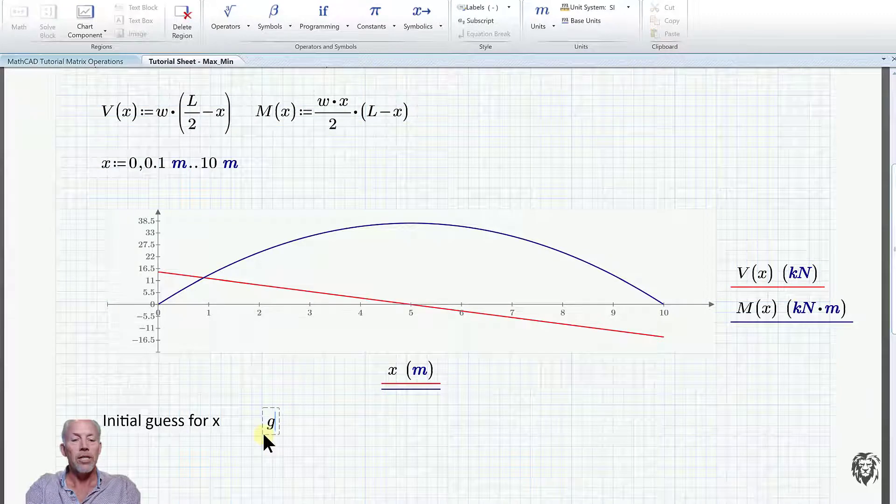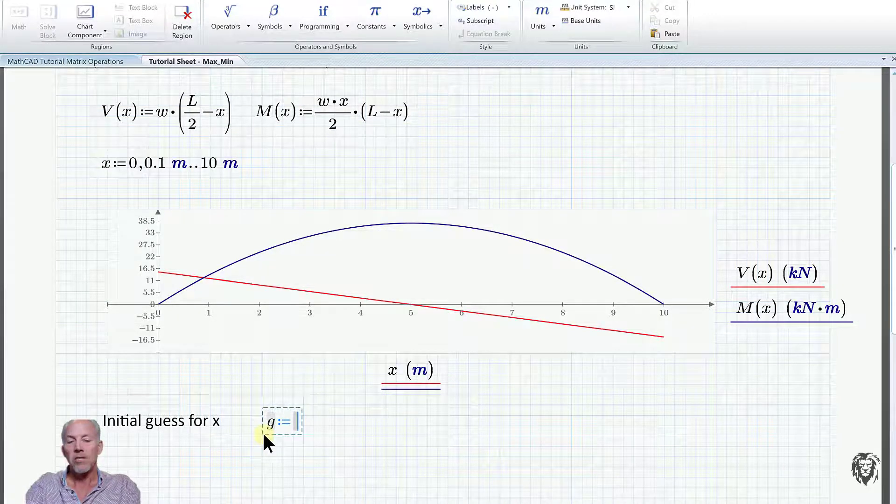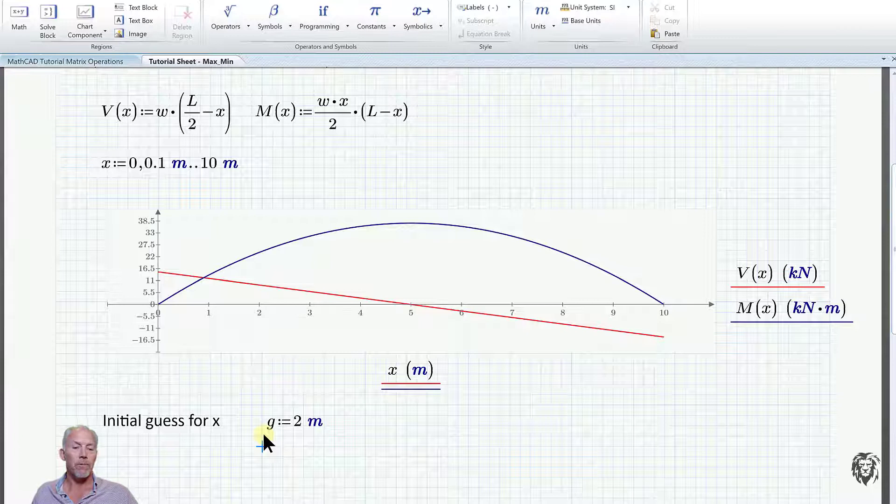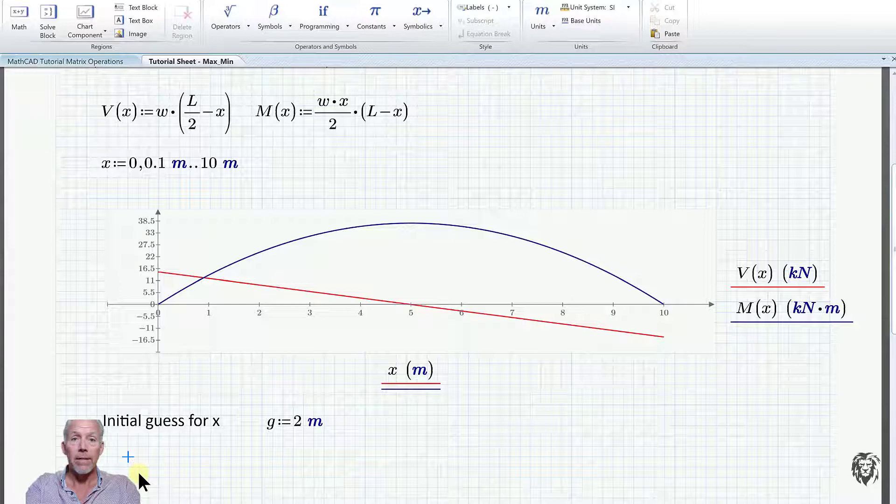And we'll call that G, and define that as some value, doesn't really matter. I'm going to call it 2 meters. So I'm very specifically choosing a value that isn't where we know the maximum occurs, just to show that we're not cheating the system. And then I'm going to have it calculate for me the value of X at which the maximum moment occurs.